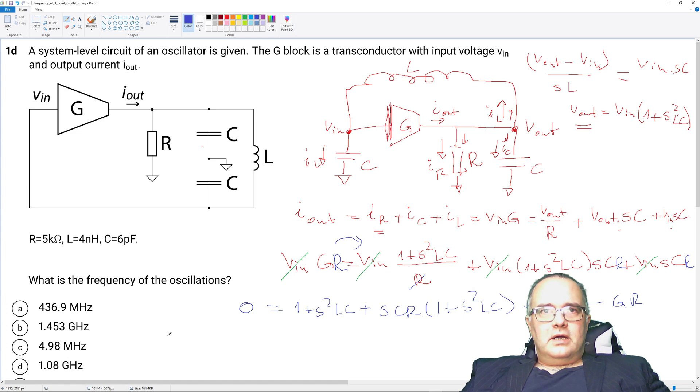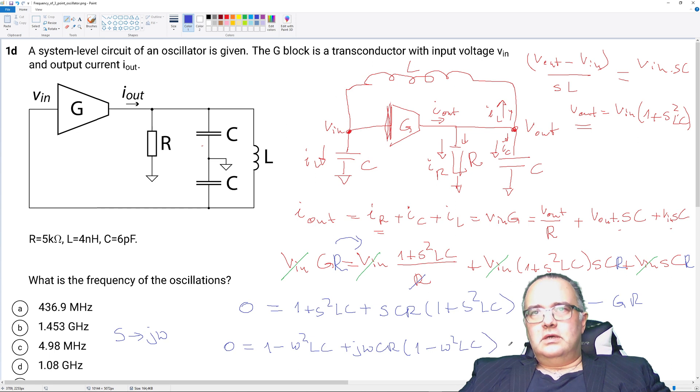For sinusoidal oscillations with stable amplitude I can substitute S with jω. So what I'll get. Still 0 is equal to 1. J square is minus omega square LC plus jωCR 1 minus omega square LC plus jωCR minus GR.